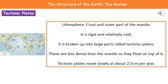The lithosphere is also broken up into large parts called tectonic plates, and you can see those in the diagram on the left. The yellow lines give us the boundary between them. These tectonic plates make up the entire surface of our planet, and they are constantly moving — at about two and a half centimeters a year. So they're moving slowly, but they are moving.